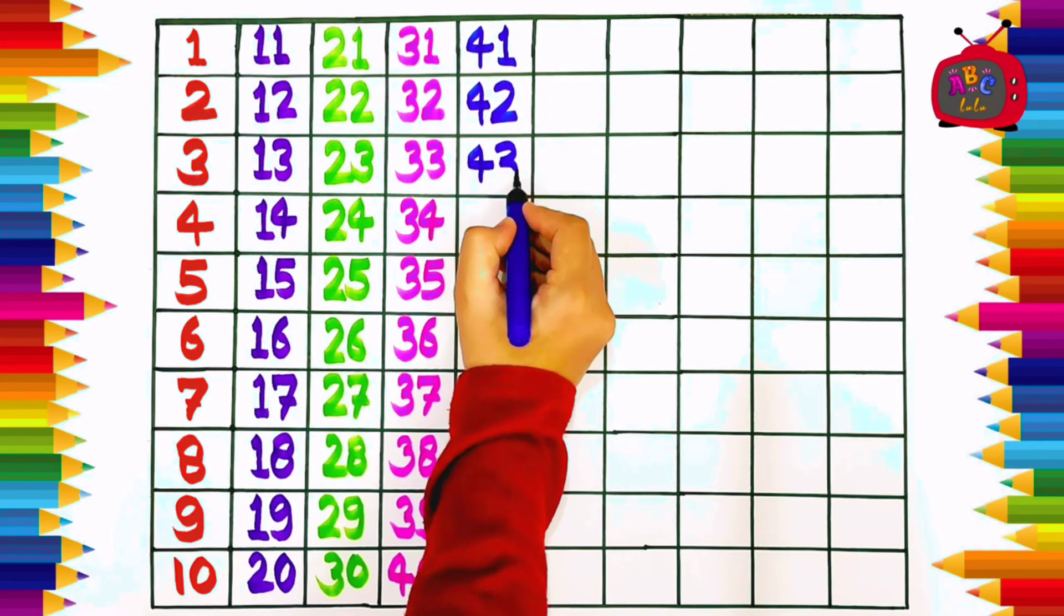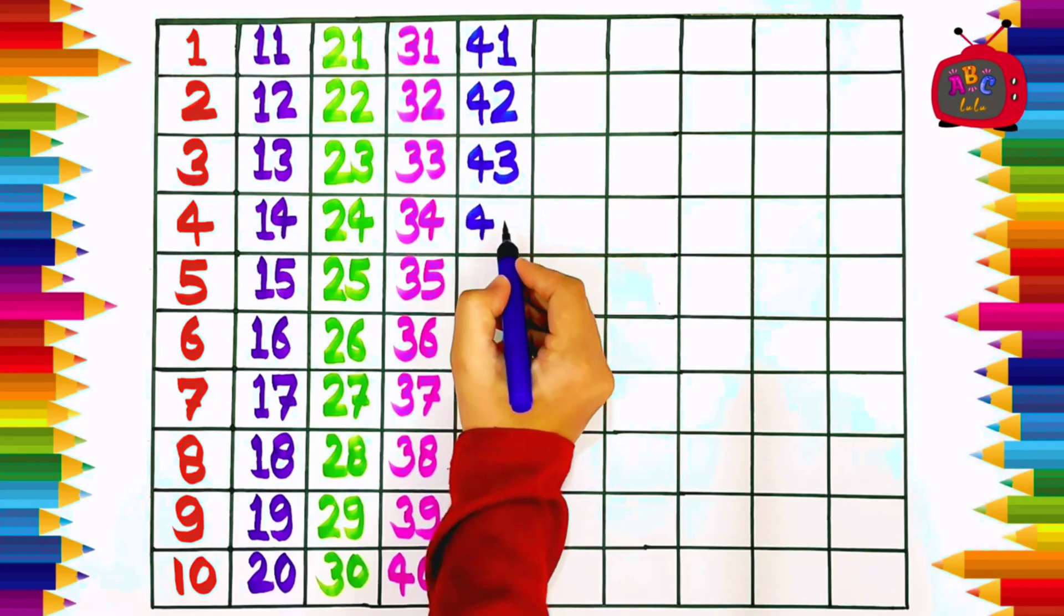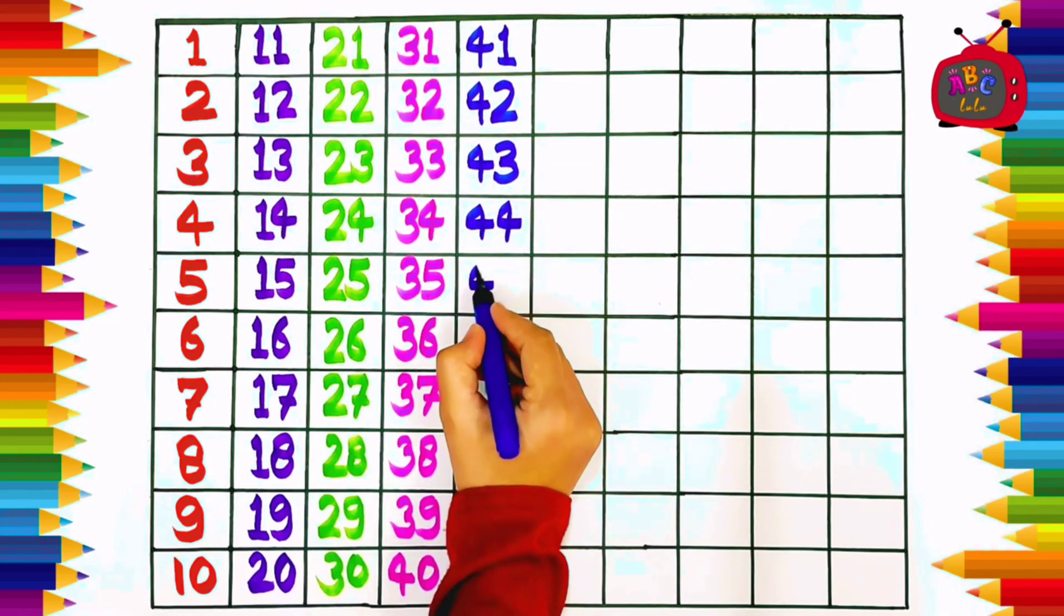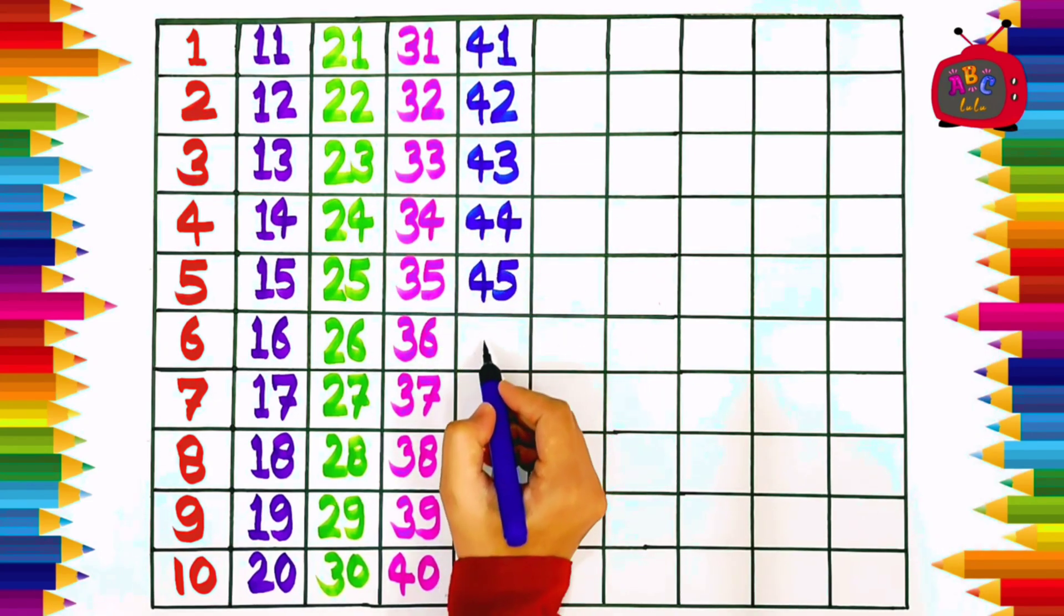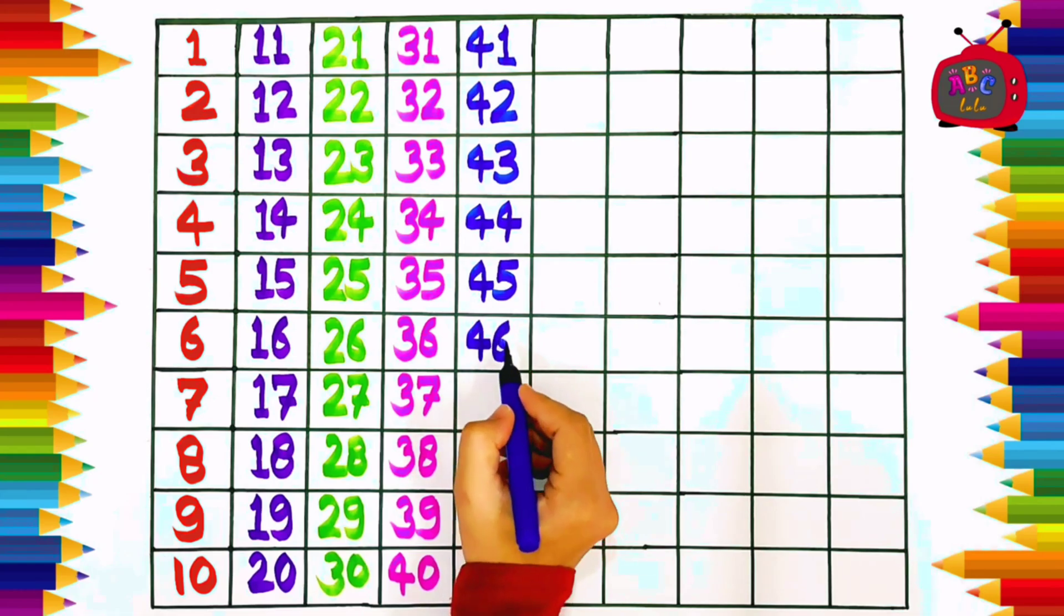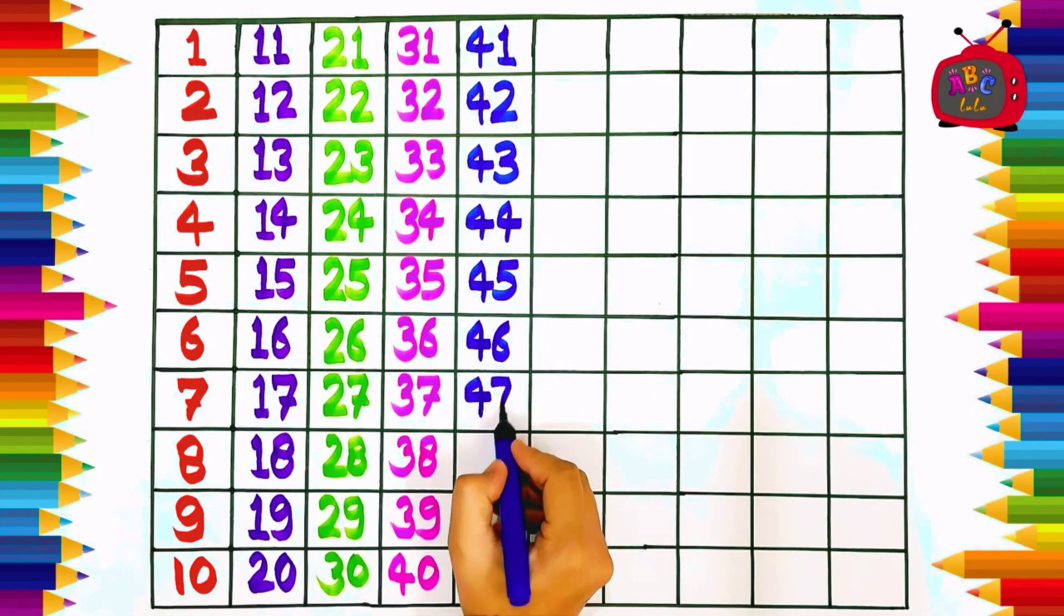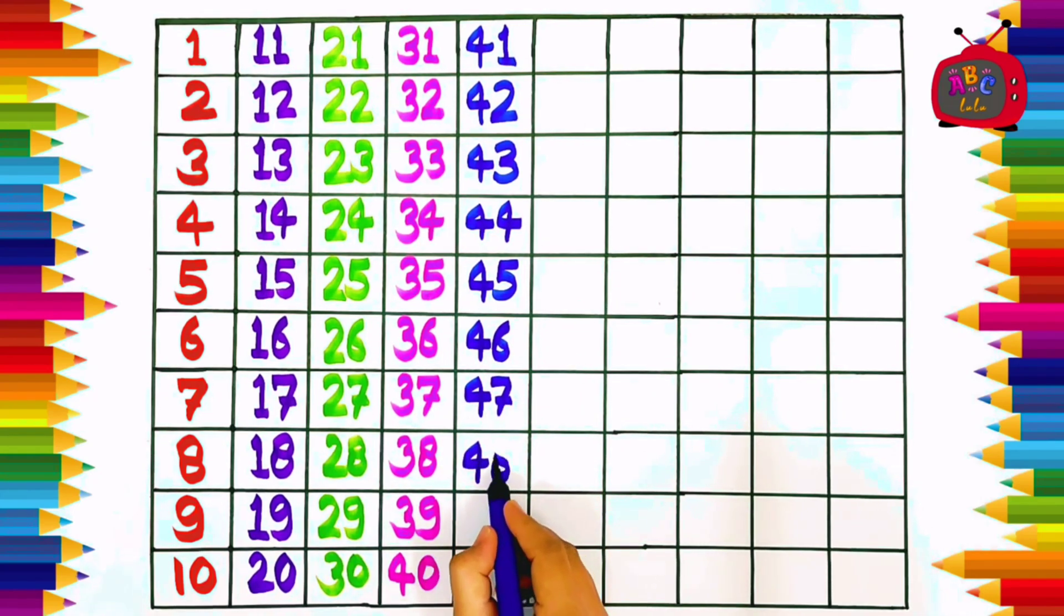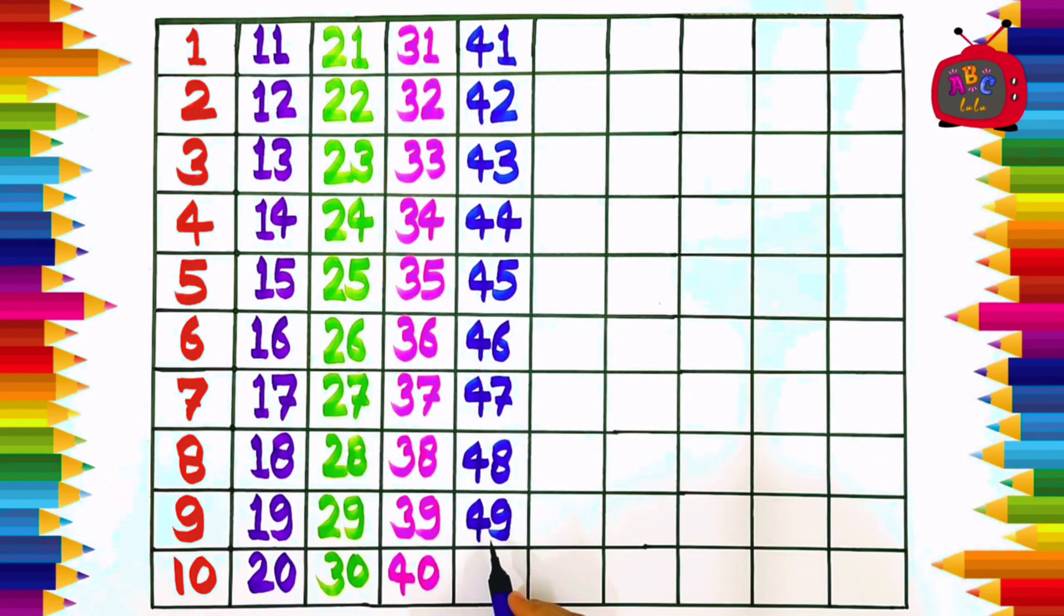Four five, forty-five. Four six, forty-six. Four seven, forty-seven. Four eight, forty-eight. Four nine, forty-nine. Five zero, fifty.